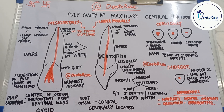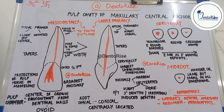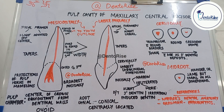In our series of dental anatomy, we discussed the anatomy of the permanent maxillary central incisor — the link to that video is given in the description box below. From this video onwards, we will be making a gradual shift to the endodontic part of this tooth by discussing the pulp cavity of the maxillary central incisor. This will be done under four headings: pulp cavity mesiodistally, labiolingually, cervically, and at the mid-root level. Watch the video till the end to understand it well.